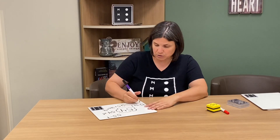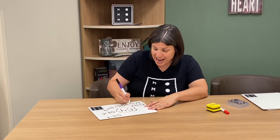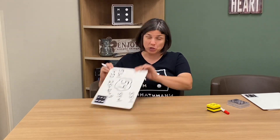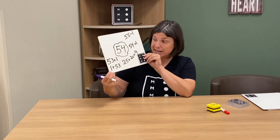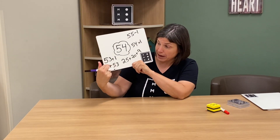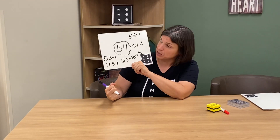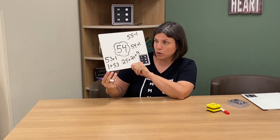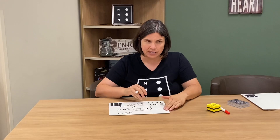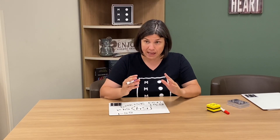It's a great way to talk about the commutative property. For example, if students know that 53 plus 1 equals 54, you can say that's a two-for-one — because when you add numbers, it doesn't matter which order your addends are in. 1 plus 53 is the same as 53 plus 1.